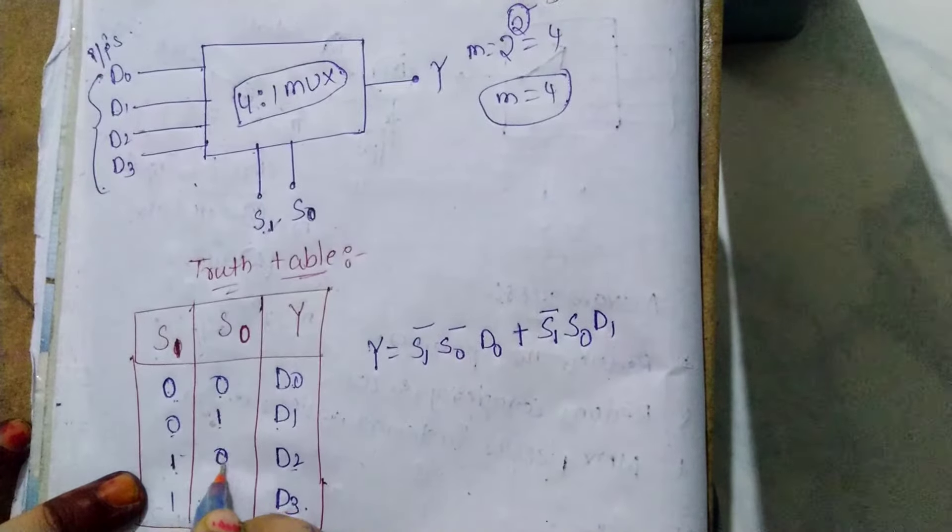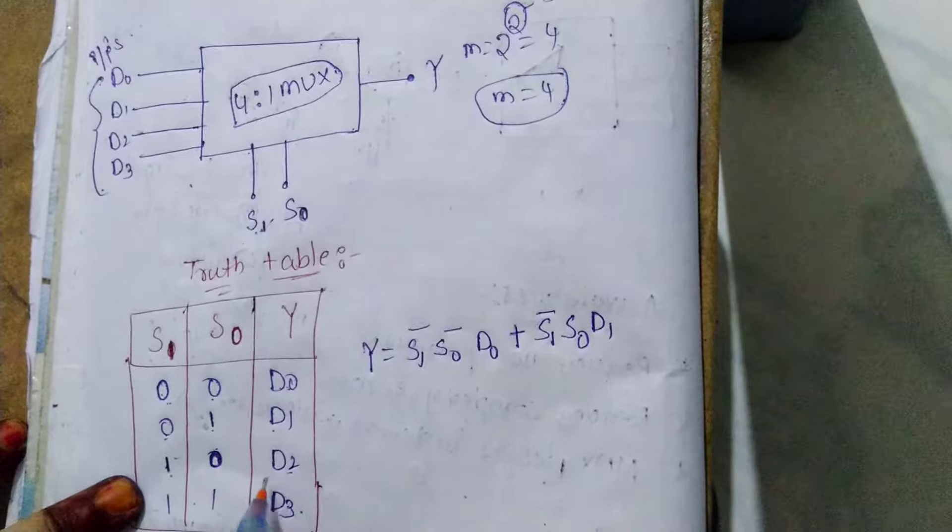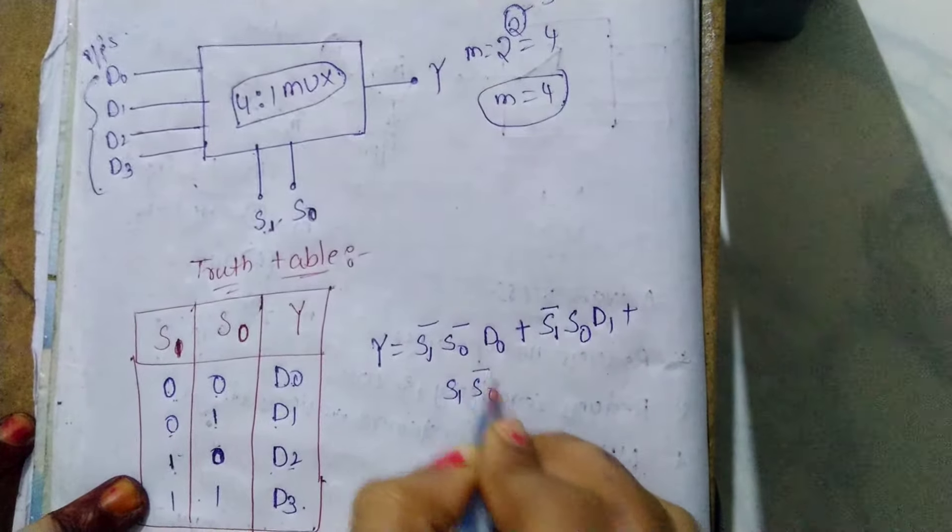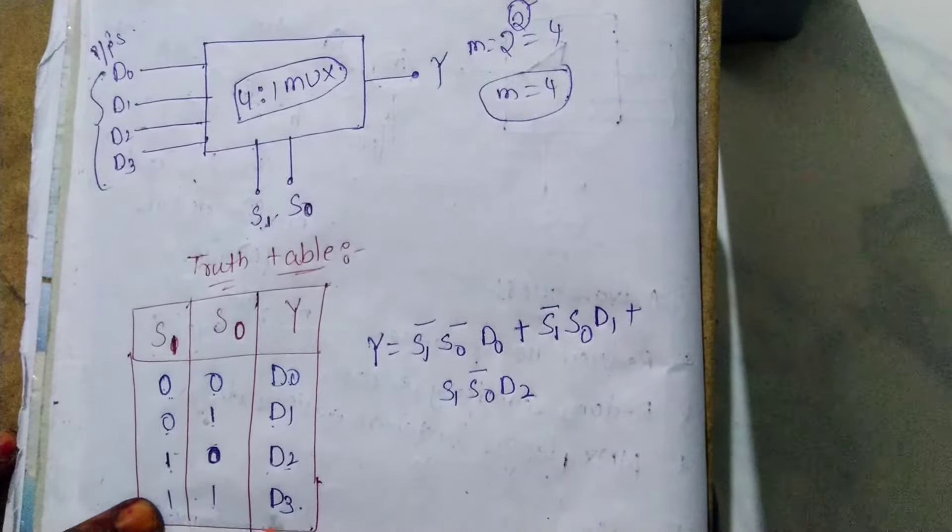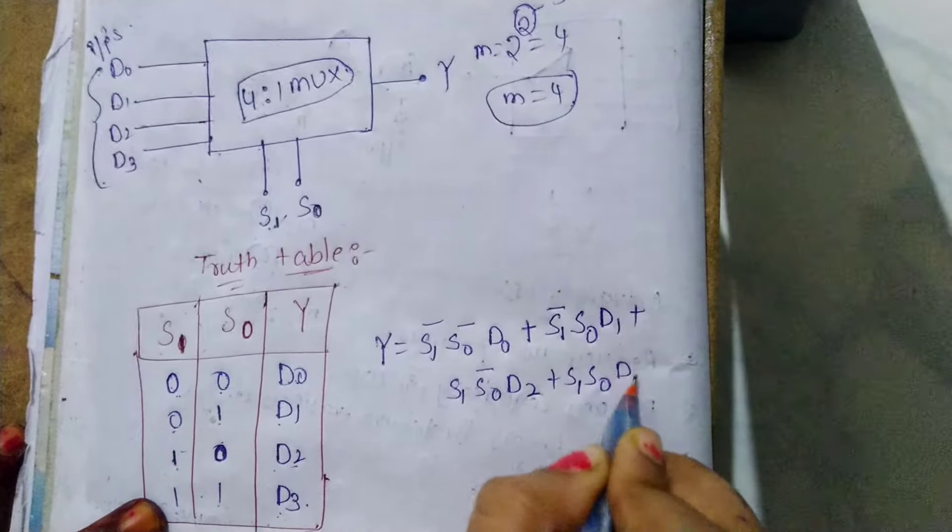Plus S1 S0 D3. So we have S1 complement S0 complement D0, plus S1 complement S0 D1, plus S1 S0 complement D2, plus S1 S0 D3.